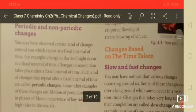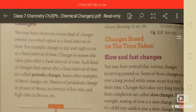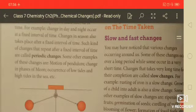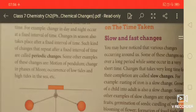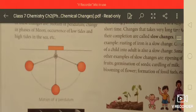Changes based on time taken: slow and fast changes. A few changes take very long time—these are called slow changes. And a few changes take very short time—these are called fast changes.